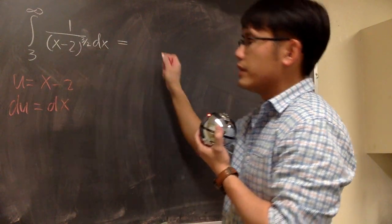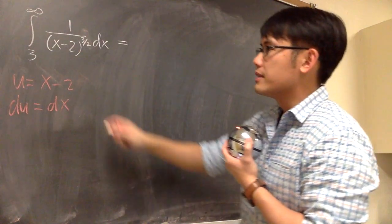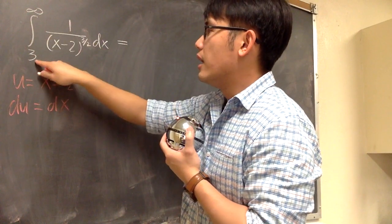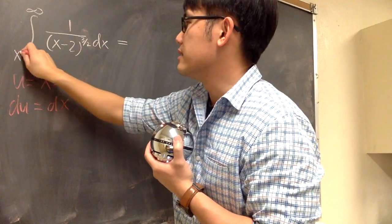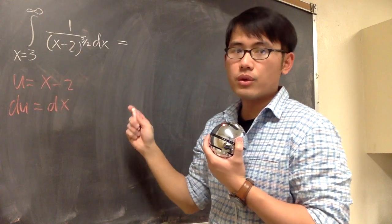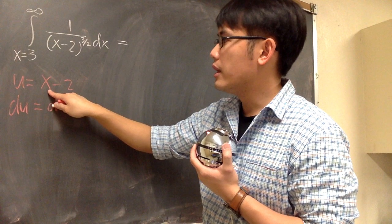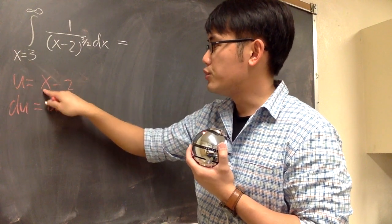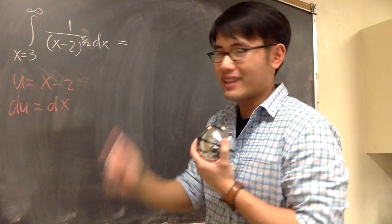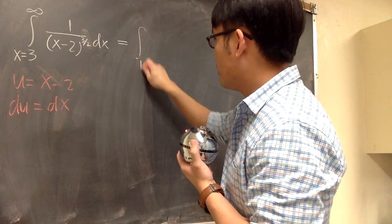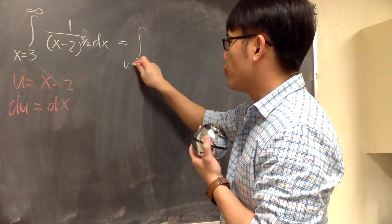We have to take this integral into the u world carefully because here we have these numbers. This number means we have x equal to 3, that's the starting value. In the u world, we have to plug in 3 into here. That means if x equals 3, u will be 3 minus 2, which is 1. So we'll start off with 1 in the u world.